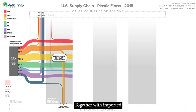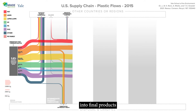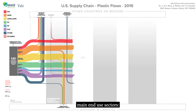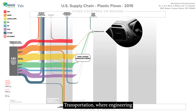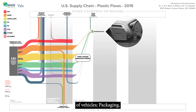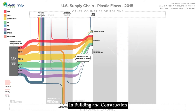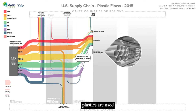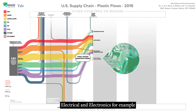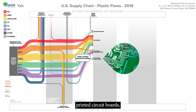Together with imported intermediate plastics, they are then manufactured into final products and grouped into nine main end-use sectors. Transportation, where engineering plastics can be used for the interior of vehicles. Packaging, which includes water bottles, food packaging, or cleaning supplies. In building and construction, plastics are used for piping or windows. Electrical and electronics, for example, printed circuit boards.